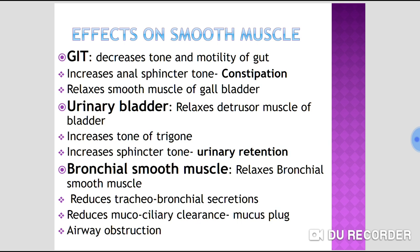Effect on bronchial smooth muscles: atropine relaxes bronchial smooth muscle producing bronchodilation. However, it is contraindicated in bronchial asthma and COPD because it reduces tracheobronchial secretions and mucociliary clearance, leading to mucous plug formation and airway obstruction — despite being a bronchodilator.